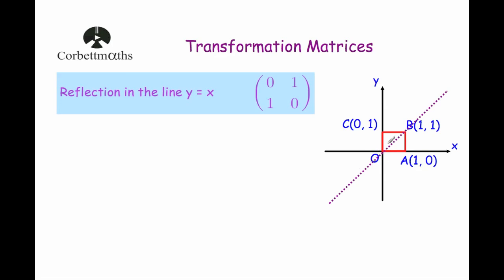So it will reflect this unit square in that mirror line. In other words, the points O and B will stay where they are — they will be invariant. And then C will be reflected over to where A is, and A will be reflected to where C is. So let's have a look and see if that works.